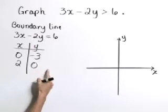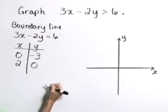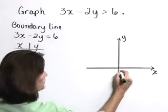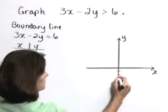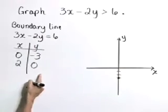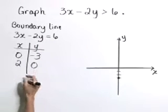Let's plot those points on our rectangular coordinate system. We have the point (0, -3) and the point (2, 0).